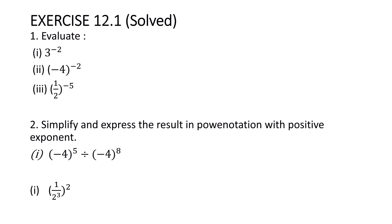Let's start with the first question: evaluate — that means find the value. The first question is 3 raised to minus 2. Here the exponent is negative, so in order to evaluate you should make it positive. We can write it as 1 by 3 raised to 2, which is 1 by 9, because 3 into 3 is 9.